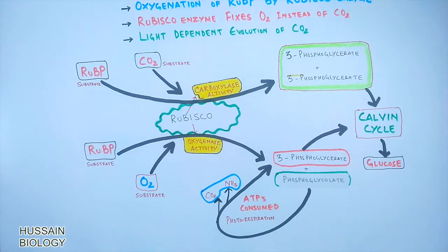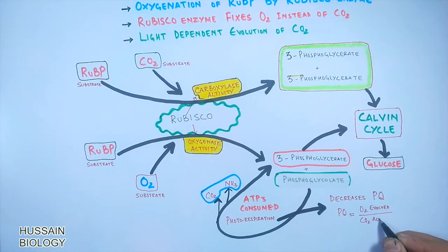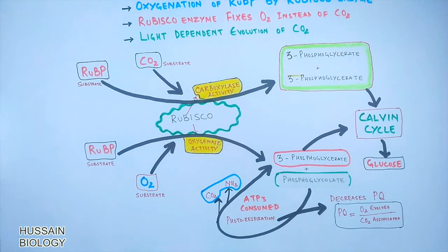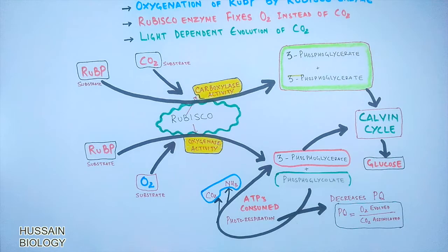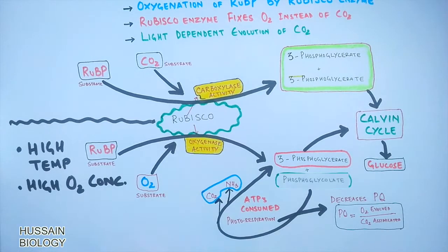The photorespiration reactions occur across three organelles: chloroplast, peroxisomes, and mitochondria. Photorespiration decreases the photosynthetic quotient, as the quotient equals O2 evolved divided by CO2 fixed, and it consumes ATP rather than producing it. Although once believed to be a wasteful process, it is now known to be involved in plant defensive mechanisms through the generation of reactive oxygen species and peroxides in peroxisomes. It is triggered by high temperature, high O2 concentration, and drought-like conditions.